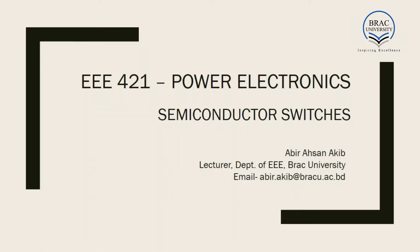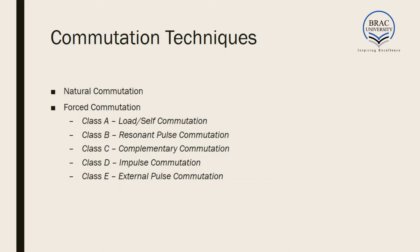Hello. In the fourth lecture we will be learning about the commutation of SCR. Till now we have learned how to turn the SCR on, that is through injecting current to the gate of the SCR, but we haven't yet learned how to turn it off. We will learn that in today's lecture. The process of turning the SCR on and off is called commutation technique.